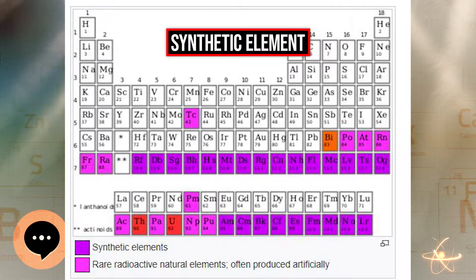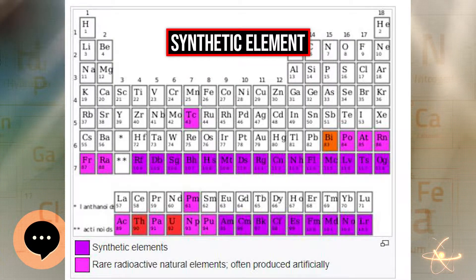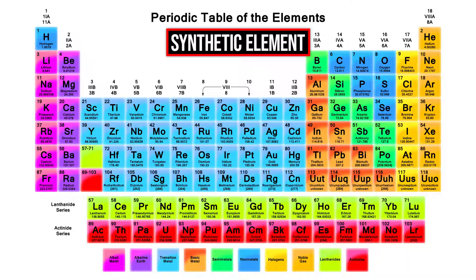Seven other elements were first created artificially and thus considered synthetic, but later discovered to exist naturally as well. Among them is plutonium, first synthesized in 1940, the one best known to lay people because of its use in atomic bombs and nuclear reactors.